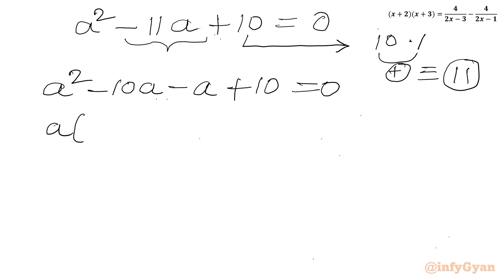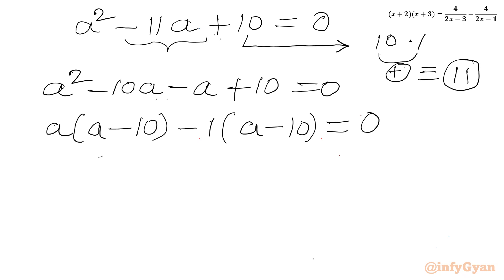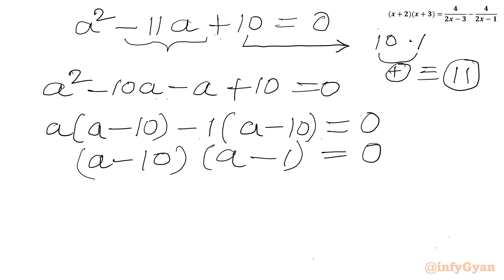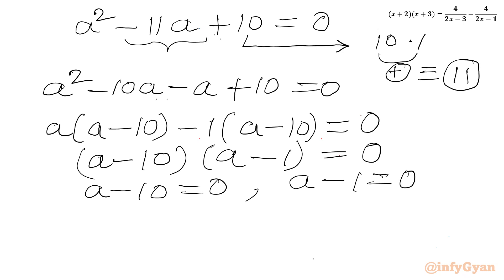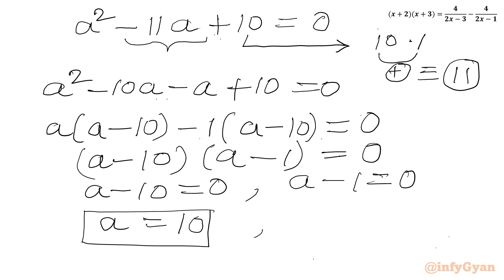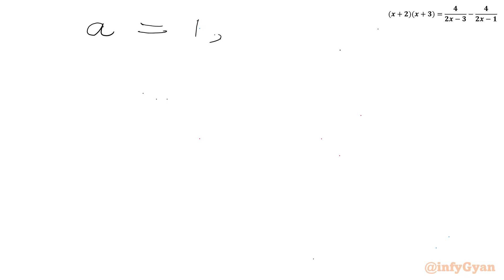Taking a common from the first two terms gives (a - 10), and taking -1 common from the last two terms also gives (a - 10). So we get (a - 10)(a - 1) = 0. Using the zero product rule: either a - 10 = 0 giving a = 10, or a - 1 = 0 giving a = 1.